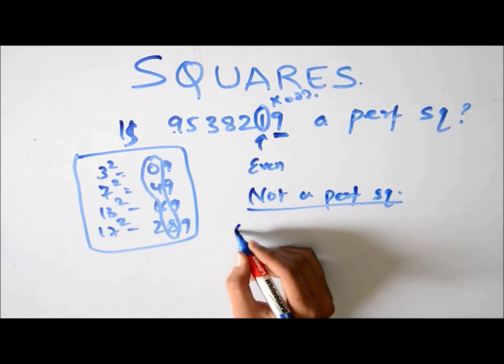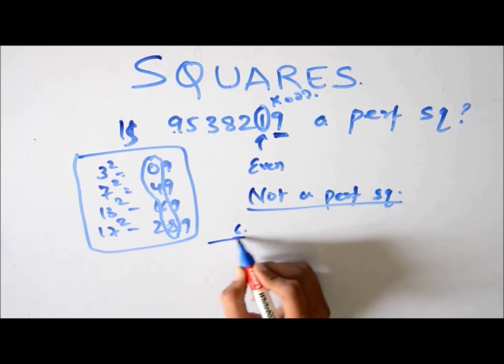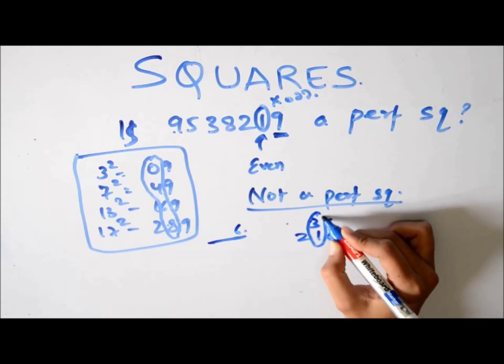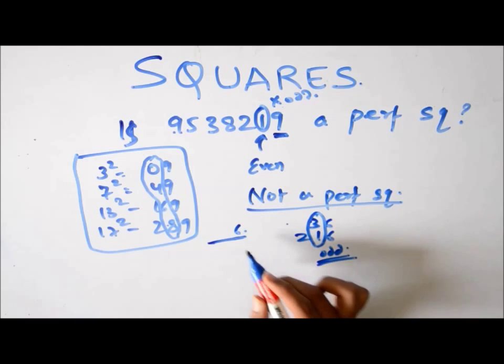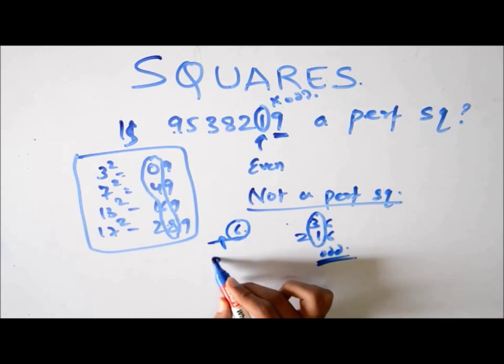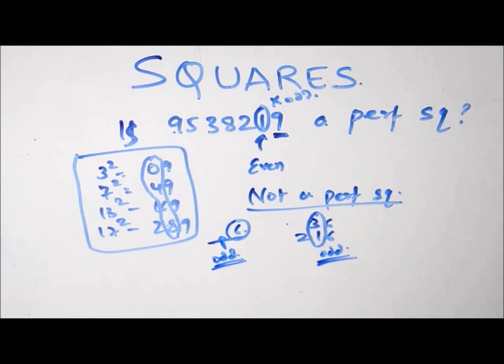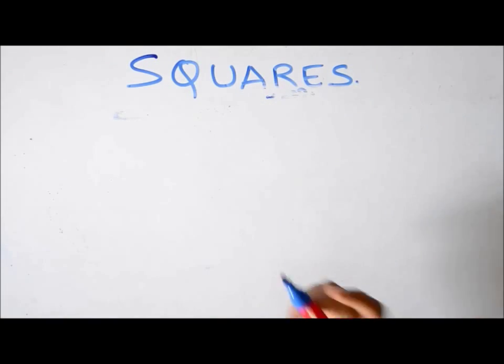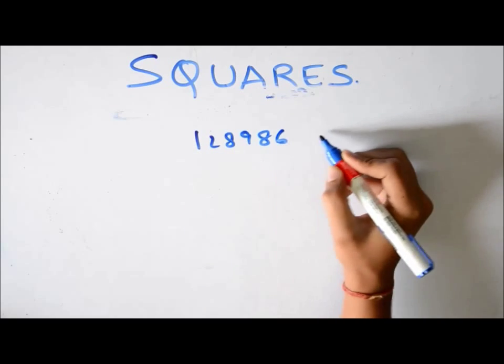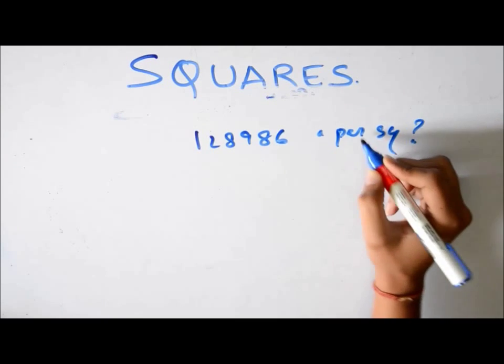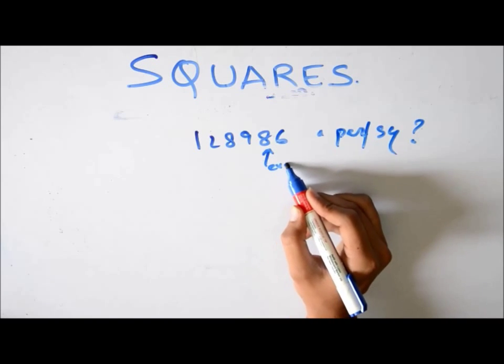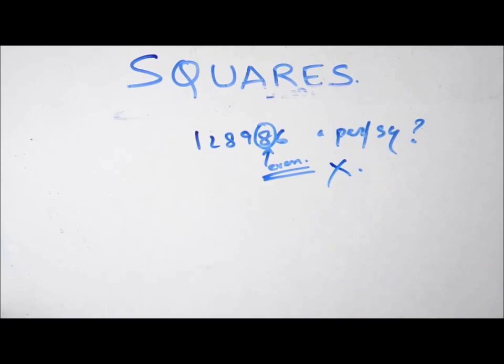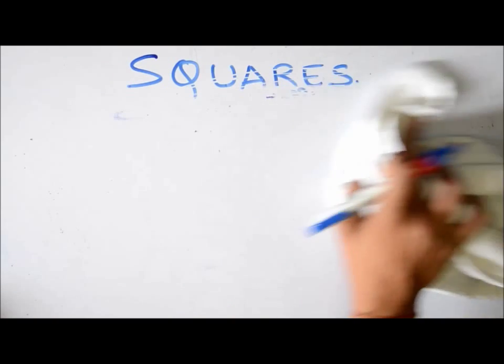Now this is a sequence which is followed for all squares. Suppose for numbers ending with 6, perfect squares ending with 6, 6 square 36, 16 square 256, all odd. So all perfect squares with numbers ending with 6 will have a second last digit necessarily odd. So if suppose the question is say 128986, a perfect square. Is it? No. Because this is even. And it cannot be even. Second last digit before 6 cannot be even. So it is not a perfect square. Okay. So now this was a concept. Let's see a question based on this.